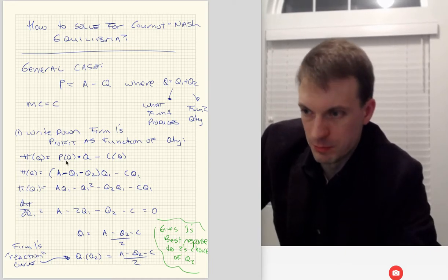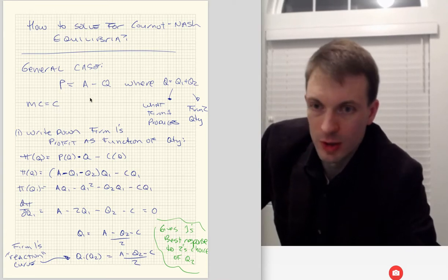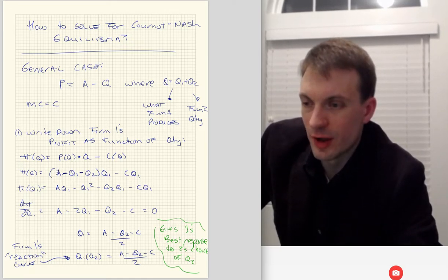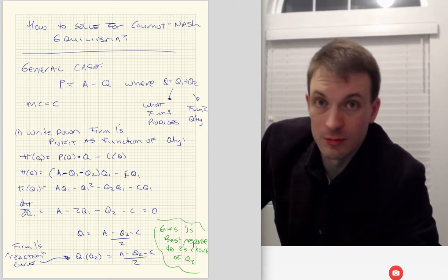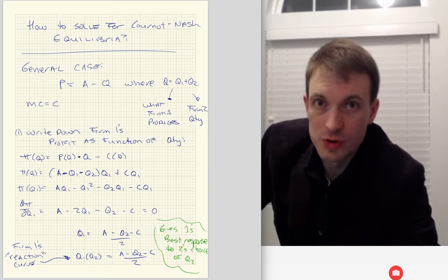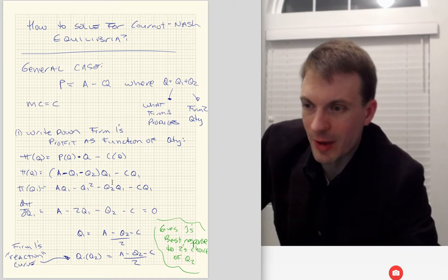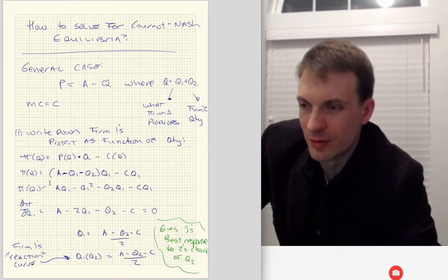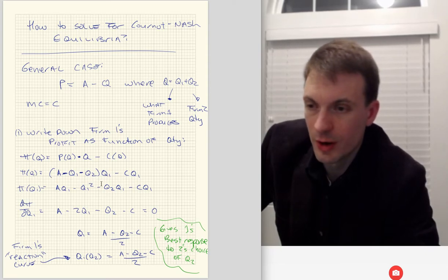P of Q is a function — that is A minus Q1 minus Q2. The relevant quantity is firm 1's quantity. And then minus marginal cost times firm 1's actual quantity. So this second line is firm 1's profit as a function of firm 1's own choice. After distributing Q1, I've got AQ1 minus Q1 squared minus Q2 times Q1, minus CQ1.